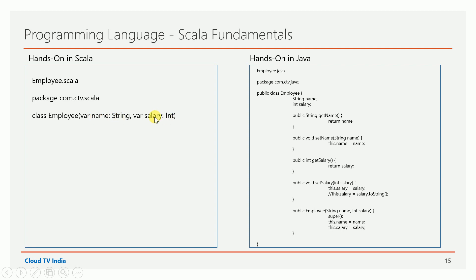In Scala, String and Int are not primitive types — everything is an object. In Java, int is a primitive type and you cannot apply String functions on primitive types. But in Scala, you can apply all operations on everything. Scala is a very concise language where you can write code in few lines and achieve a lot of functionality.